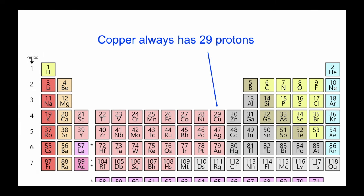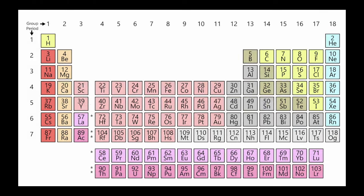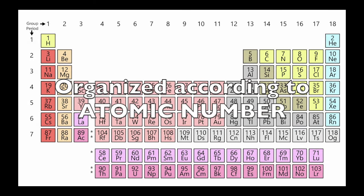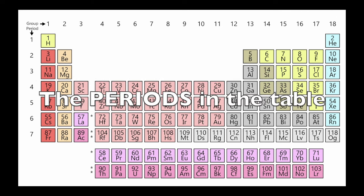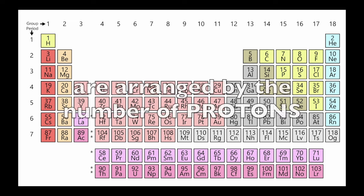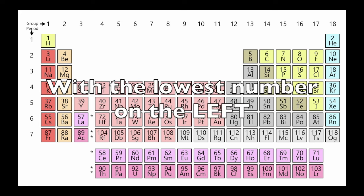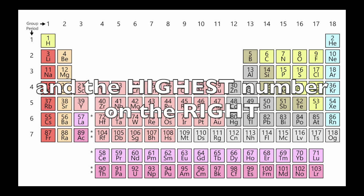A copper atom always has 29 protons. The periodic table is organized according to atomic number. An atomic number tells us the number of protons in the atom. So you could also say that the periods in the table are arranged by the number of protons, with the lowest number on the left and the highest number on the right.